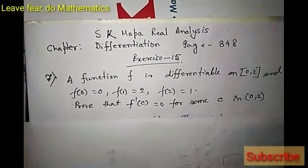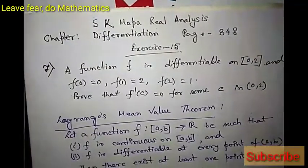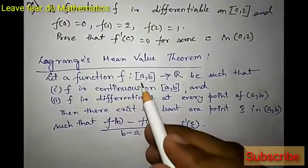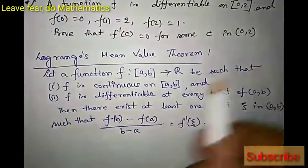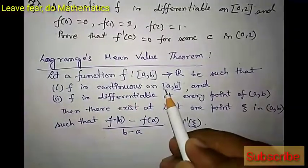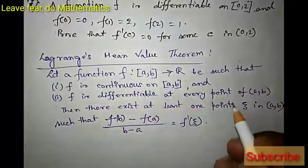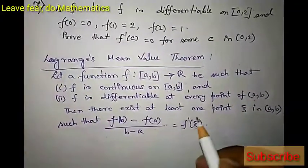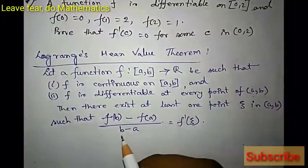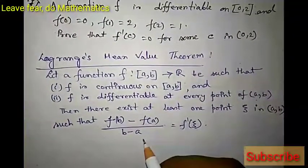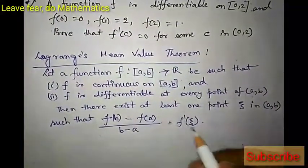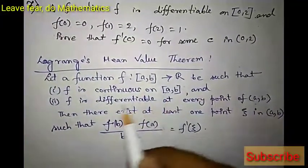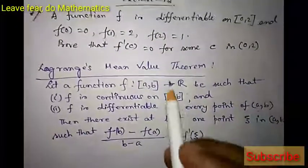To solve this problem we need to apply Lagrange's Mean Value Theorem. Lagrange's MVT says: let f from closed interval [a,b] to R be continuous on [a,b] and differentiable at every point of open interval (a,b). Then there exists at least one point j in (a,b) such that [f(b)-f(a)]/(b-a) = f'(j).